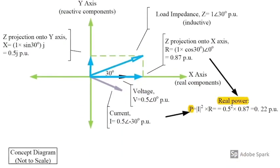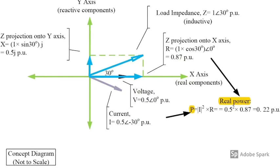Next step, real power P is current magnitude squared times resistance.